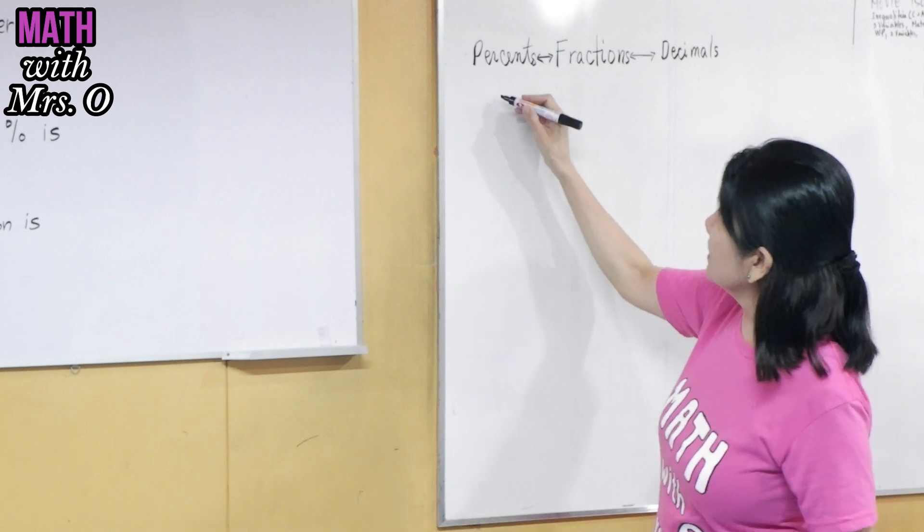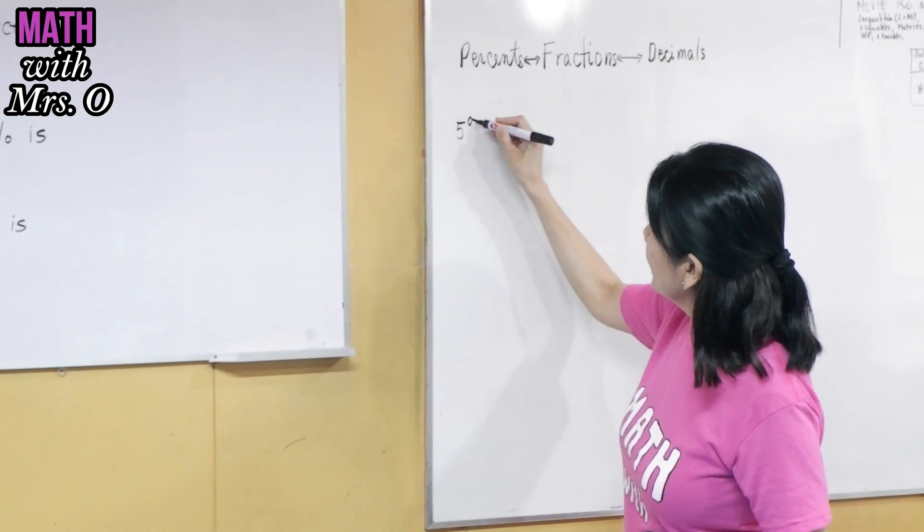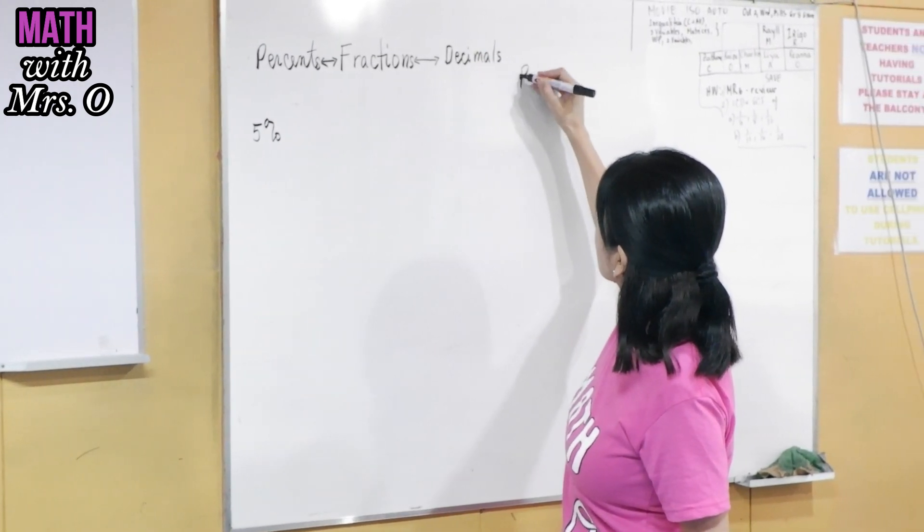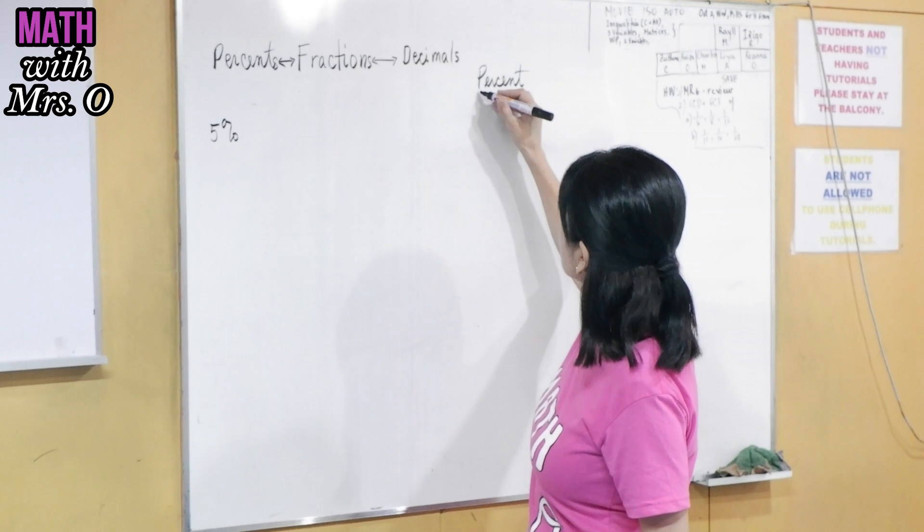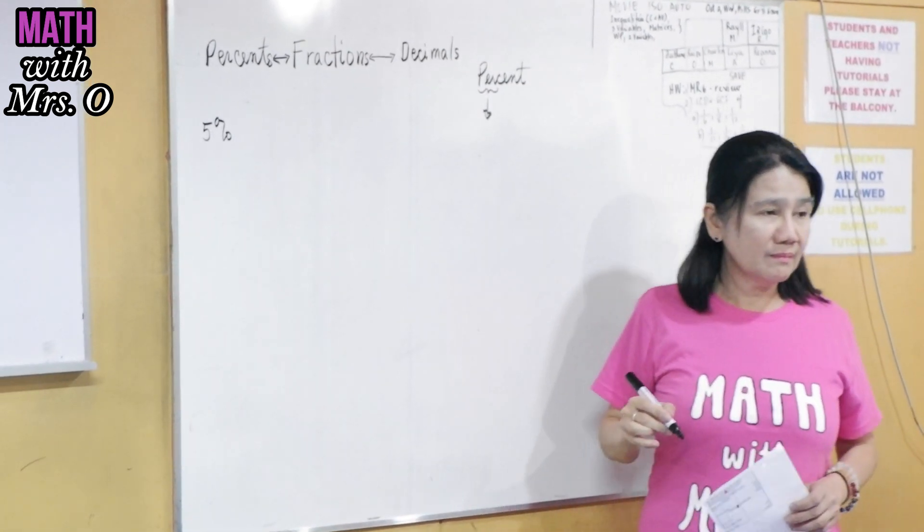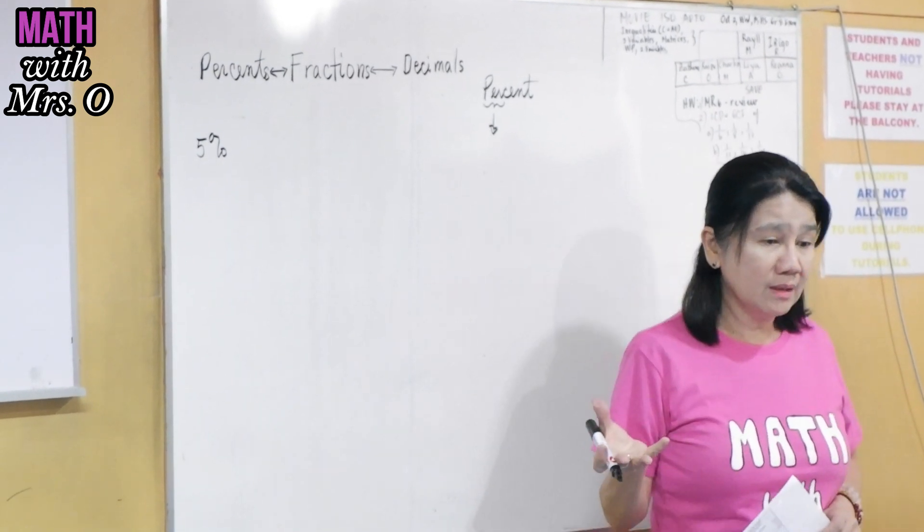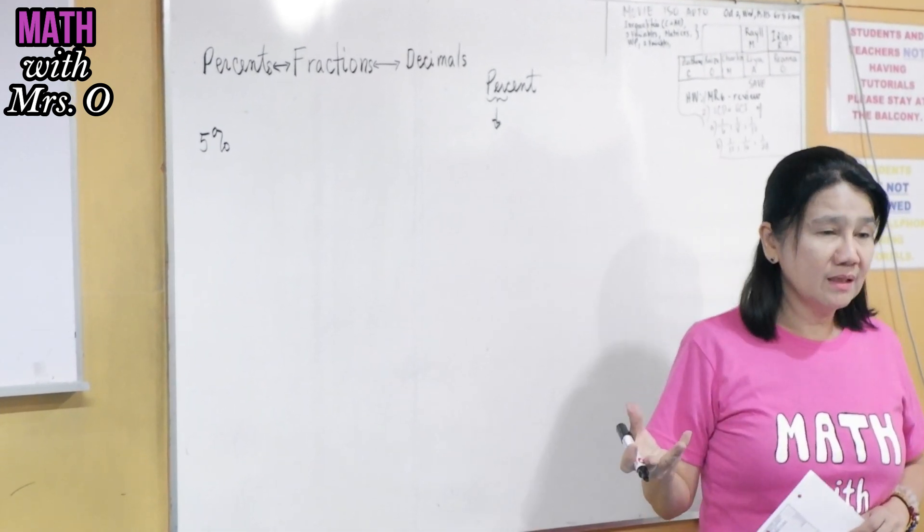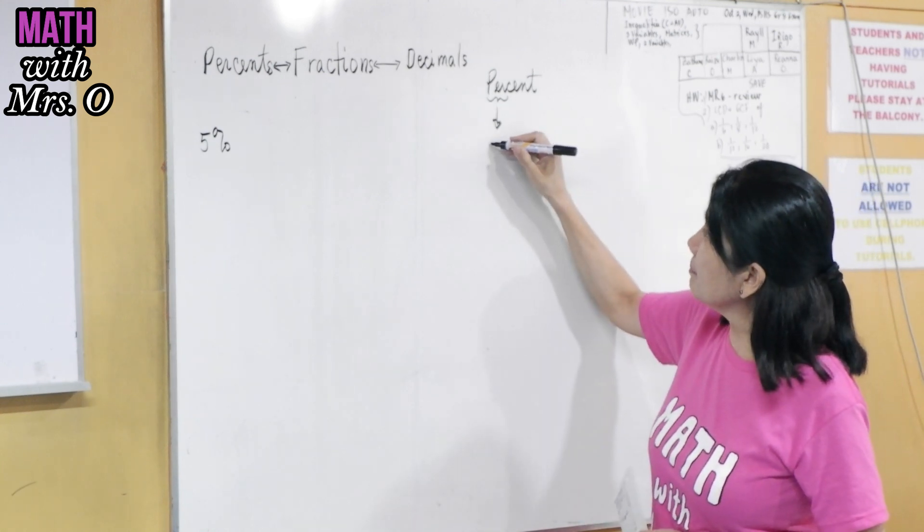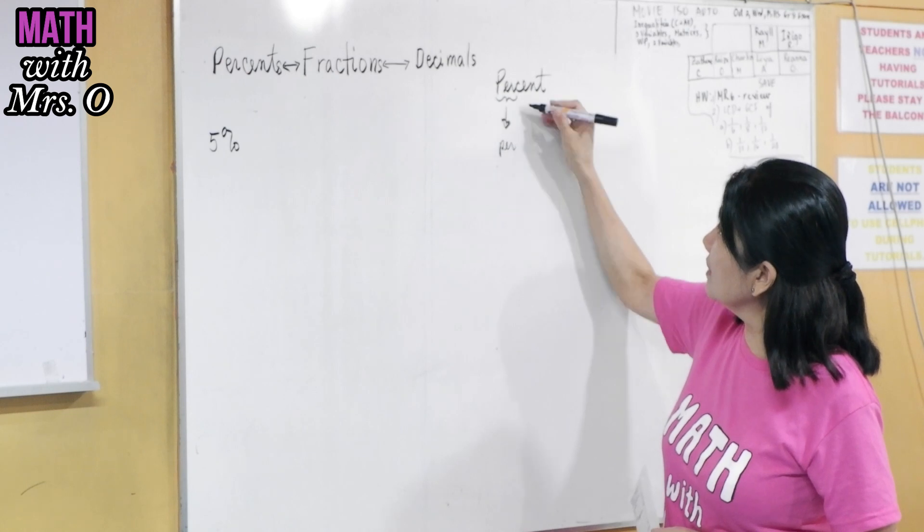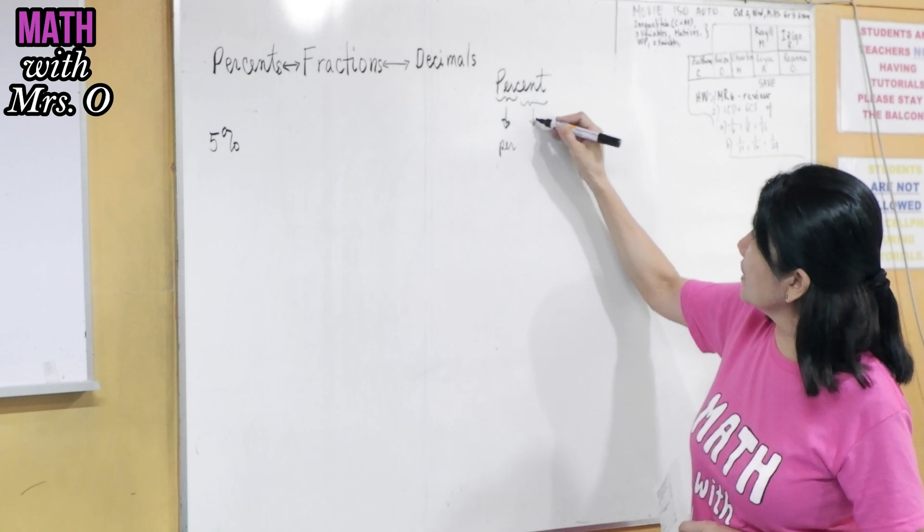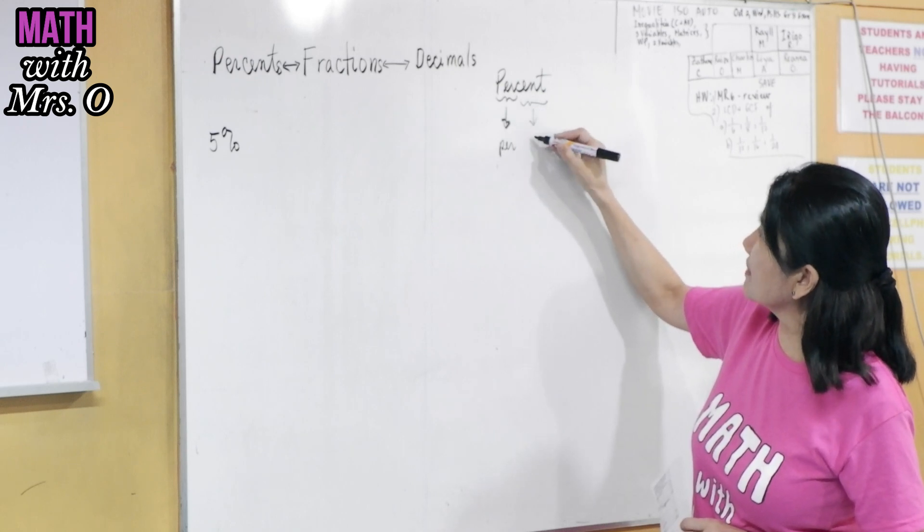So for example, we have here 5%. By the way, what's the meaning of percent? What do you think is the meaning of percent? Per means what? Let's say per week. What do you mean by per week? For every week. Per month means? For every month. So this one is per, per, what is cent? 100. Give me words with cent.